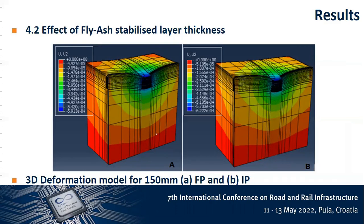The image here talks about deformation, analyzing the effect of asphalt stabilized thickness layer. One thing to point out is that looking at the deformation model for the 150 mm fly ash stabilized layer, there is a little bit of similarity, but you will notice that in the inverted pavement, the load actually spreads a little bit more widely compared to that of the flexible pavement.